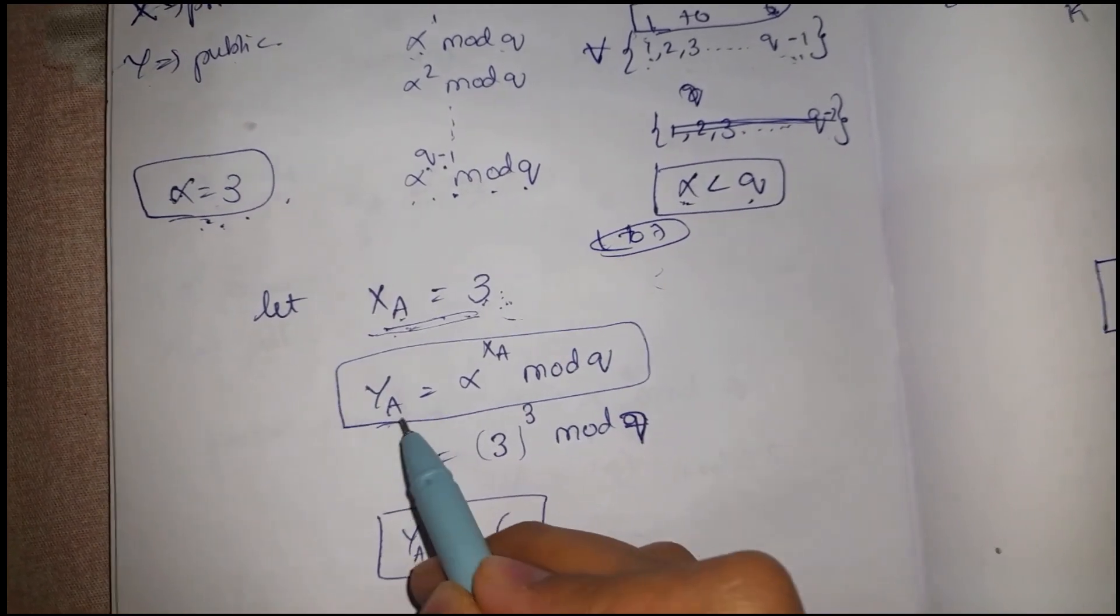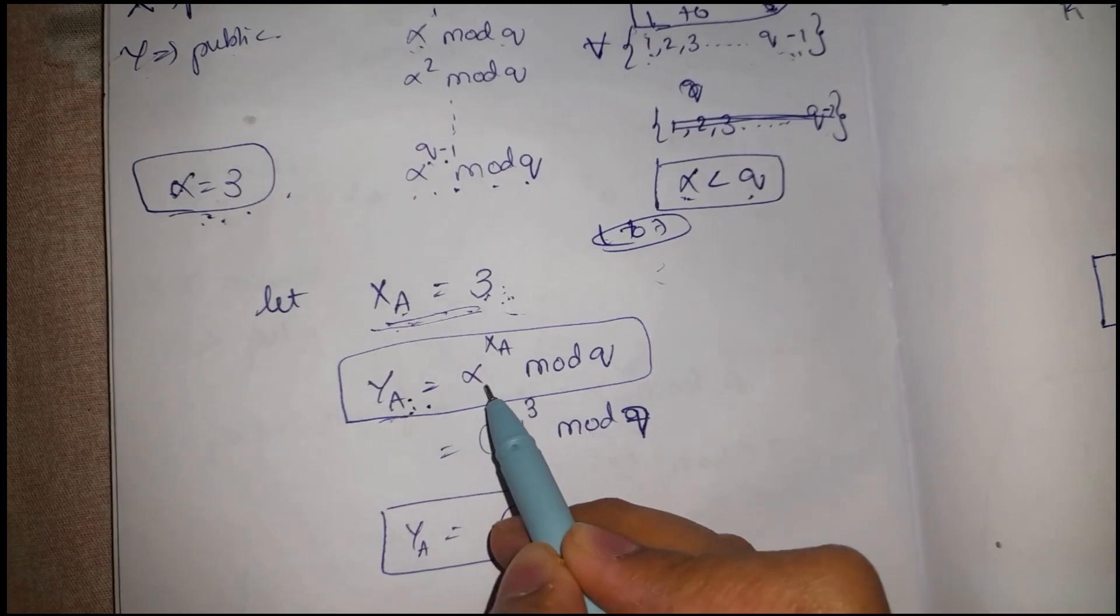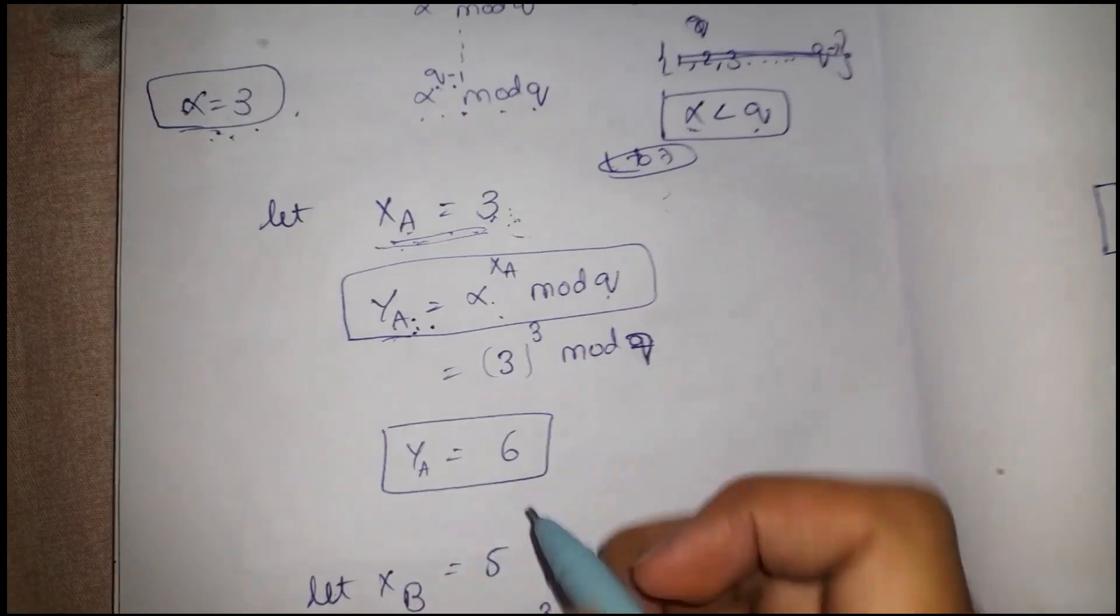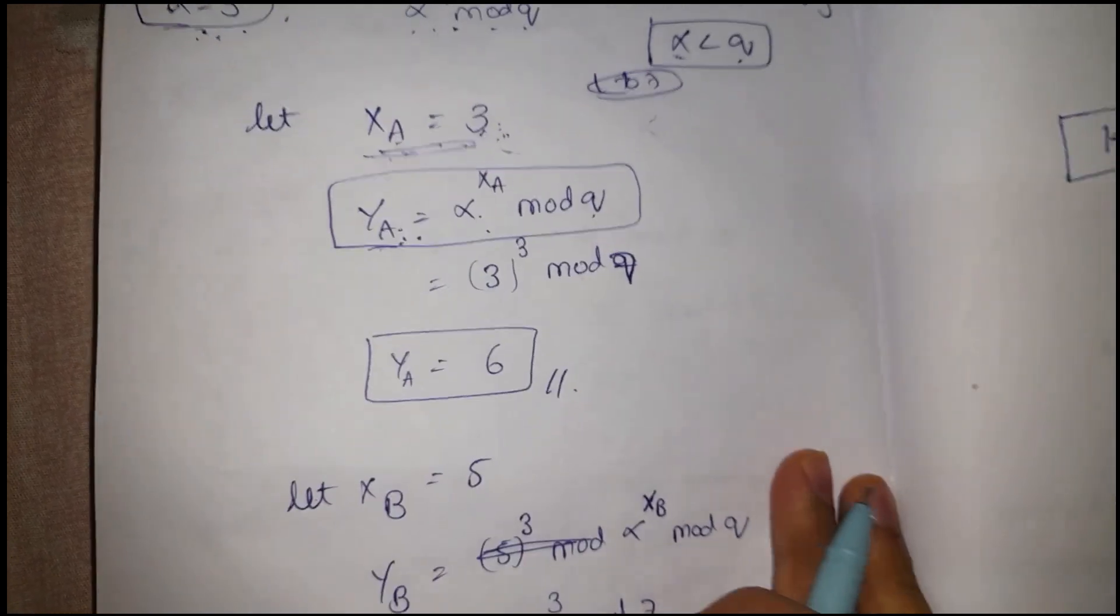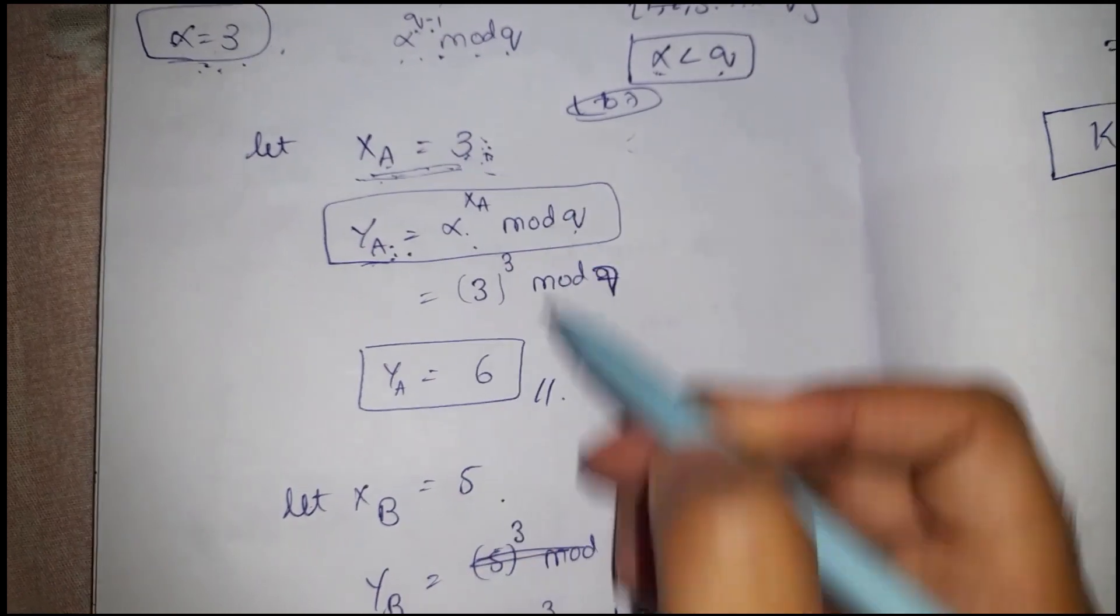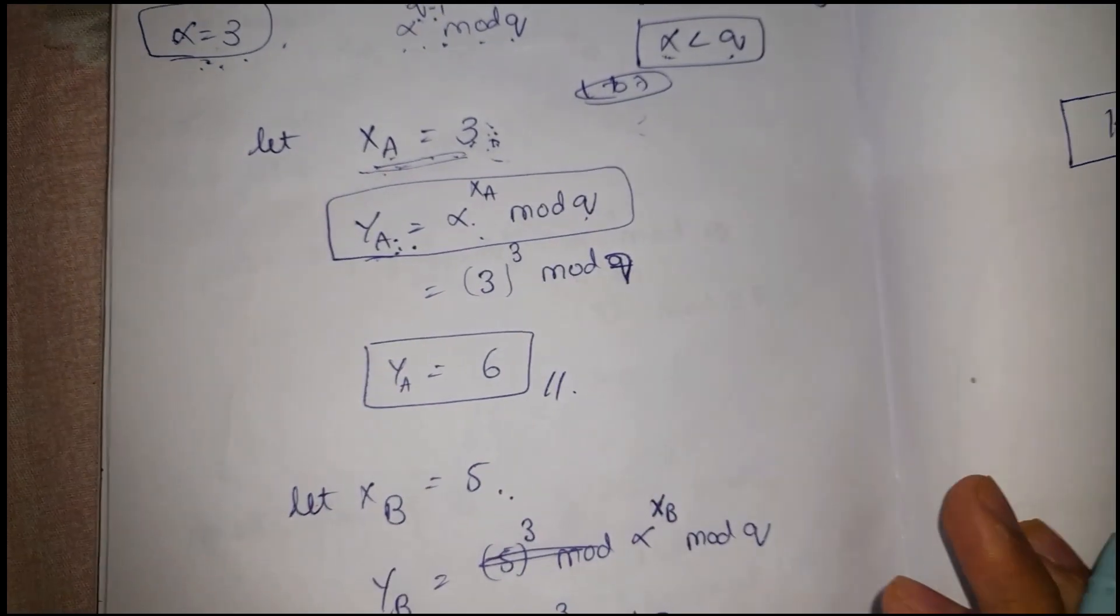From this private key, I need to find the public key using this alpha value. This is the formula by which we can find out the public key of A using the private key as well as alpha value. Upon simplifying it, you will get public key of A as 6. You can take any number; you can take even 5, you can take 11, you can take 6. The choice is yours.